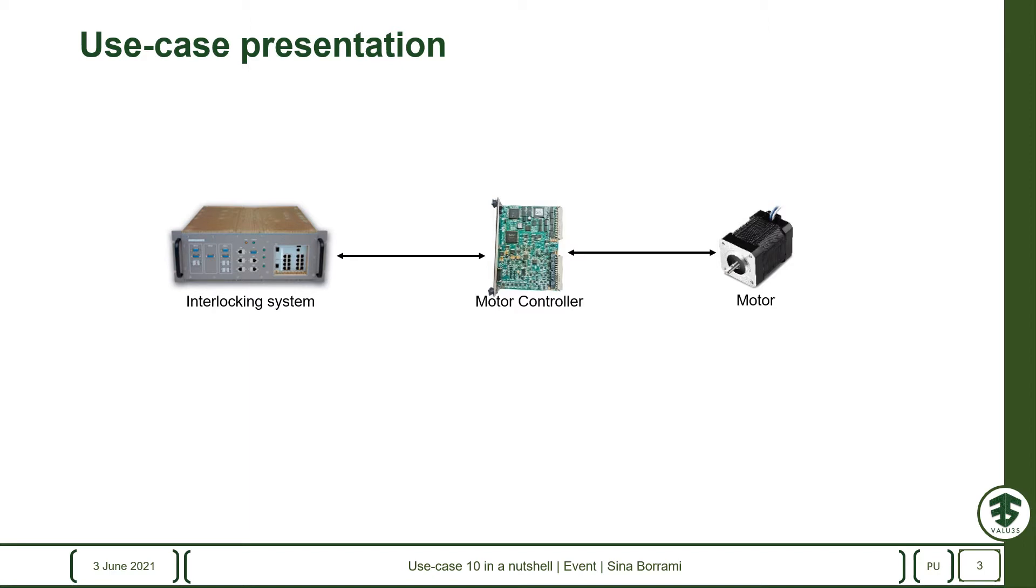As presented earlier, the railway control system is an integration of a hierarchy of various systems from interlocking system to wayside objects such as point machines. As you can see, the motor controller receives orders and transmits messages from and to the upper-level interlocking system to drive the motor accordingly.